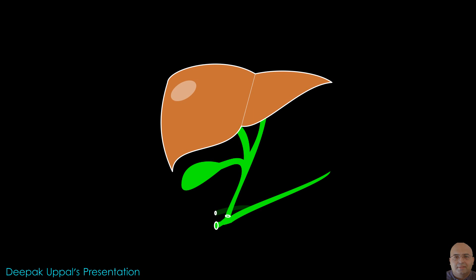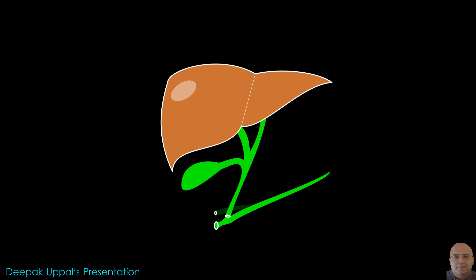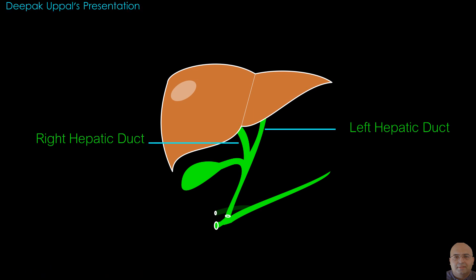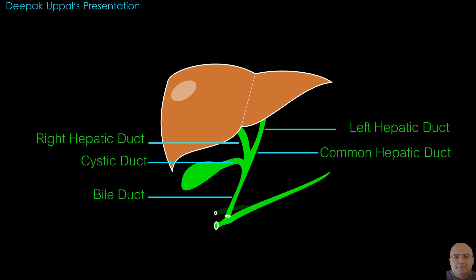Ducts of the liver: Each lobe has one duct associated with it. The right and left hepatic ducts emerge from the right and left lobes of the liver respectively. After a short course, the hepatic ducts unite to form the common hepatic duct. The common hepatic duct is then joined by the cystic duct from the gallbladder to form the bile duct.